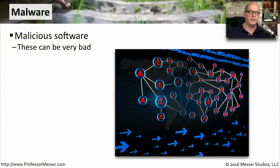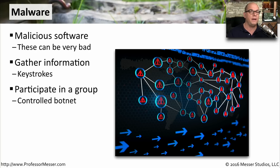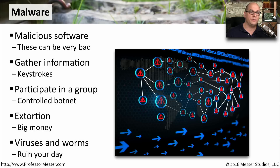One very broad category of malicious software is called malware. There are a lot of different types of malicious software that fall into this malware category, but none of these are good for your system. Some of this malware can collect information from your computer and gather keystrokes. Other types of malware might have your computer participate in a much larger botnet, so somebody else is really controlling what your computer is doing. Other types of malware may go directly to your wallet — it might hold your system hostage and require that you pay them before you gain access to your computer again. And of course, you're probably also familiar with malware that takes the form of viruses and worms, and every day is trying to infect all of our computing devices.